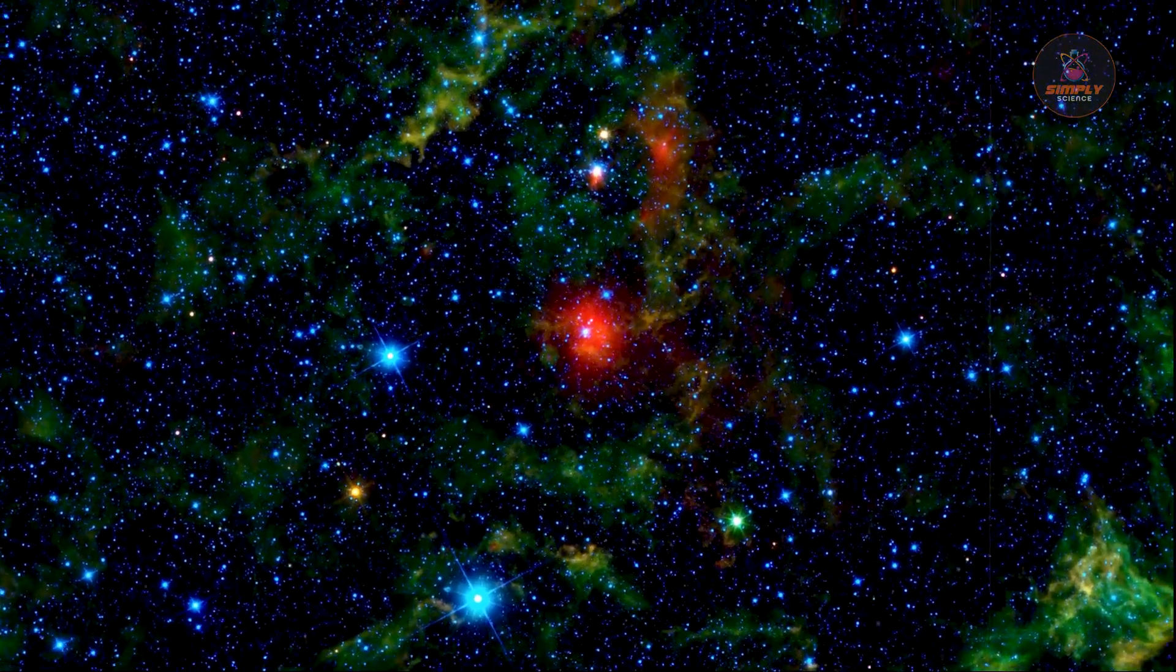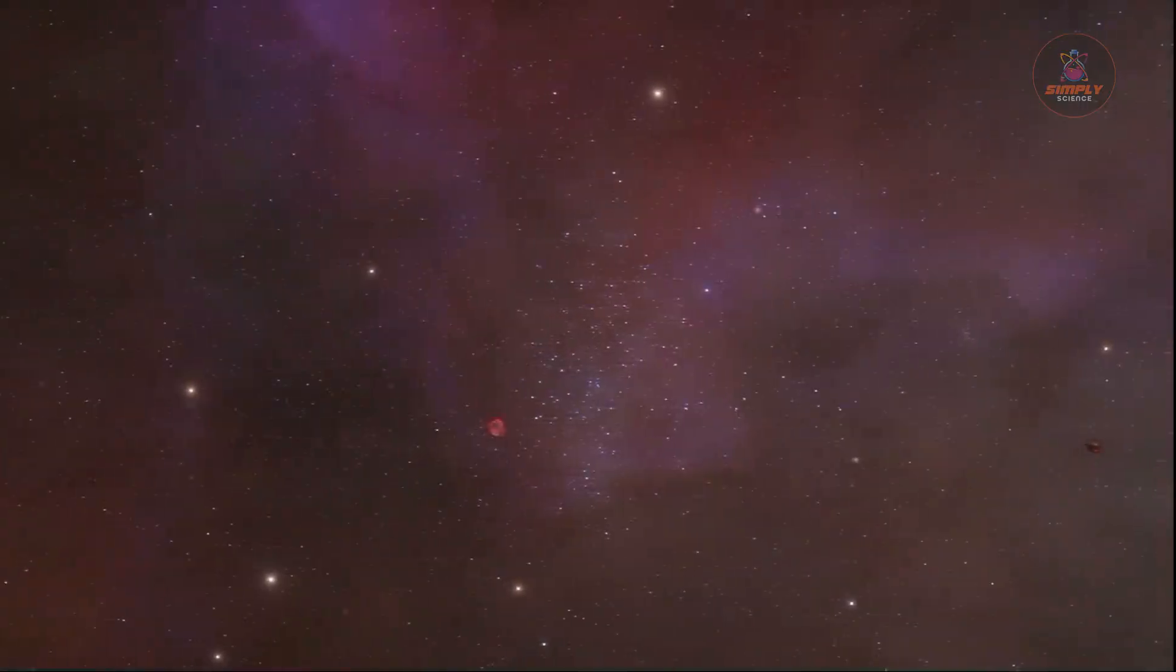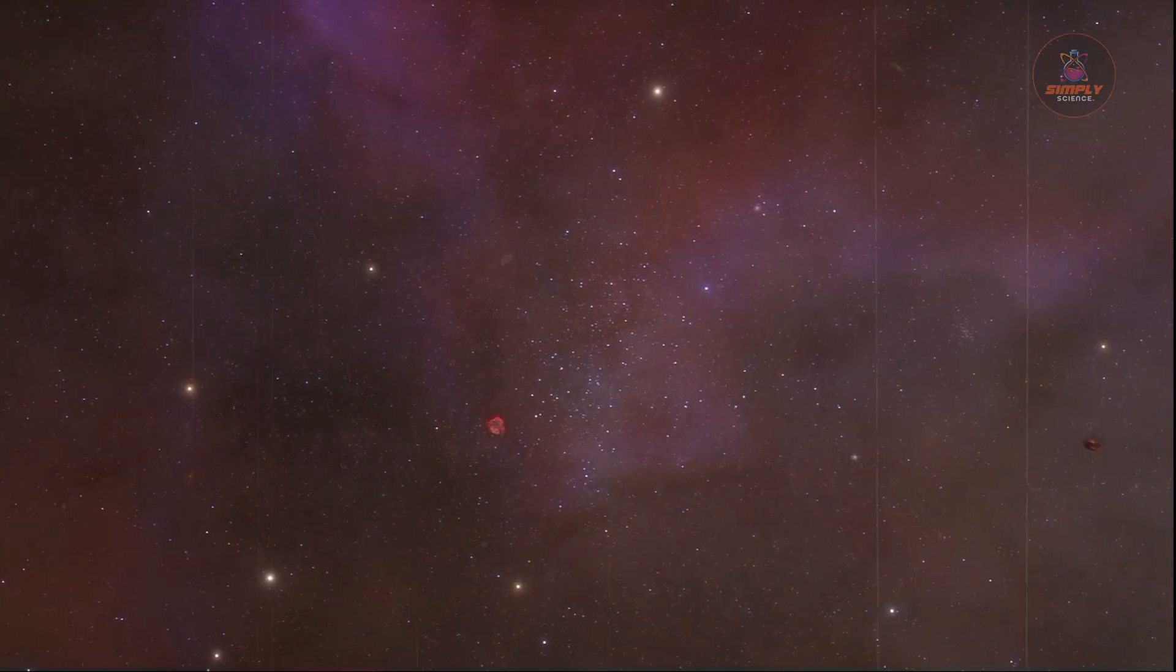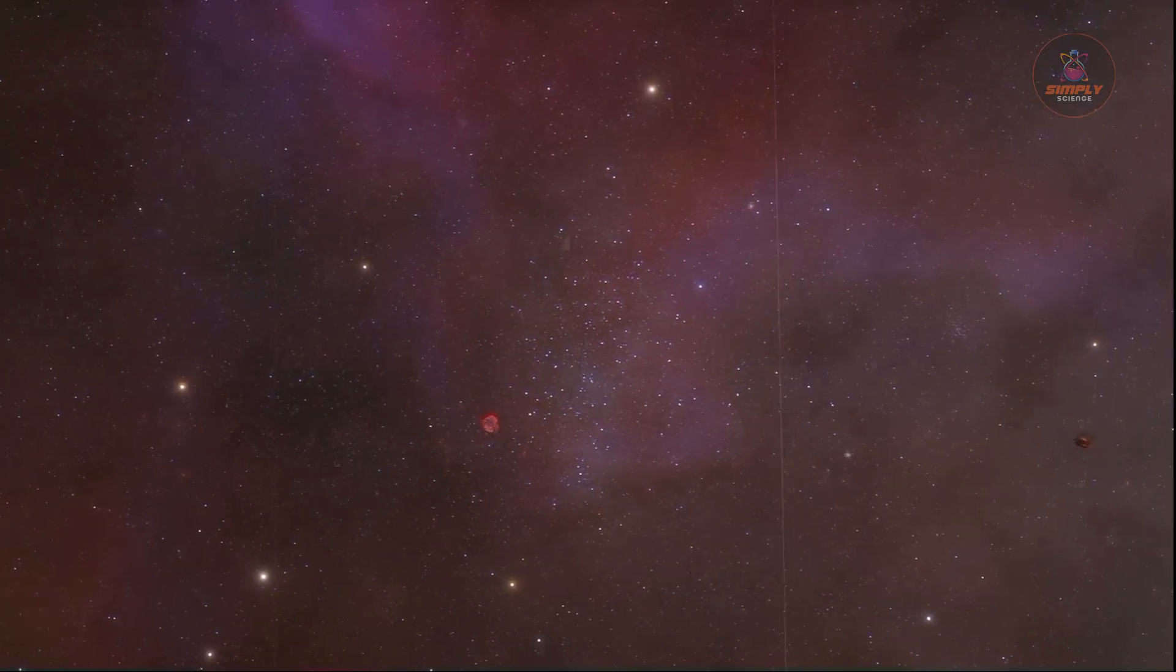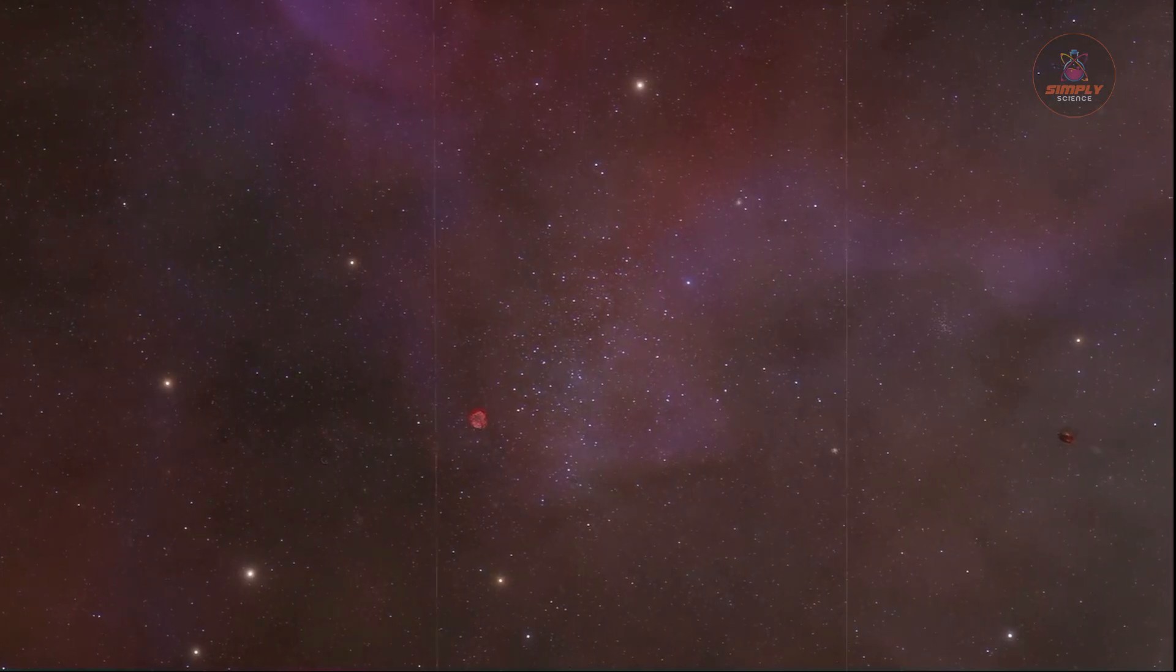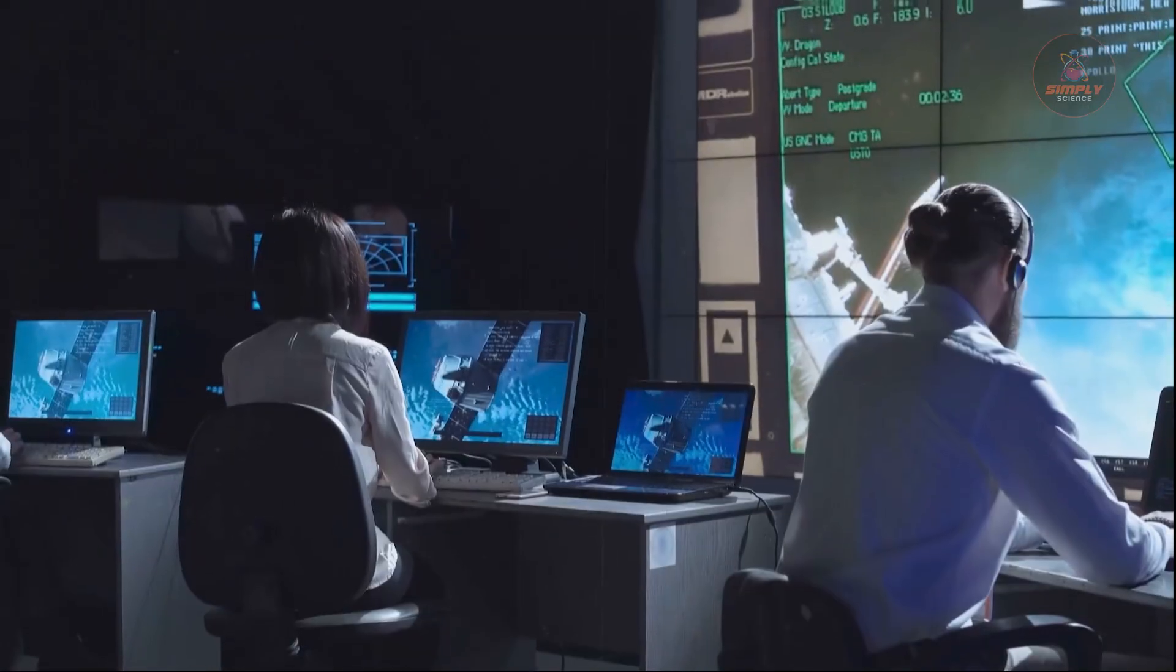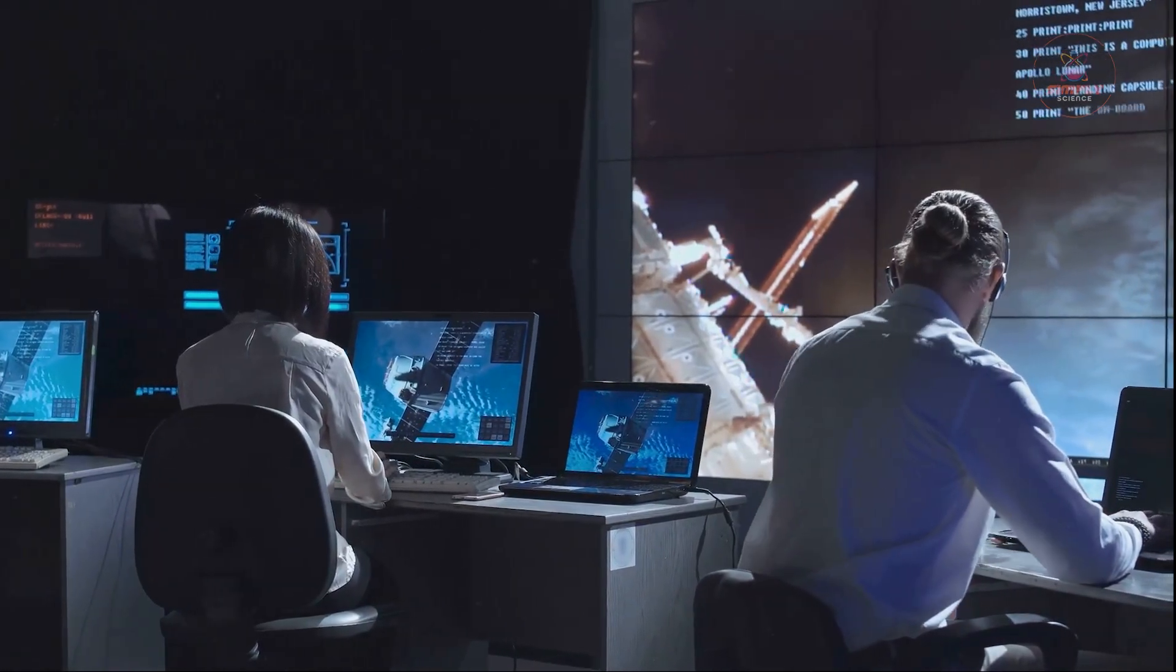The James Webb Space Telescope has shown us that the universe is not just larger than we thought, but stranger, more complex, and was built far faster than we ever dared to imagine. The Hubble Ultra Deep Field was a postcard from the past, but COSMOS-Webb is the first draft of a new history, one that we are only just beginning to read. The real frontier isn't just about distance anymore—it's about how quickly we can rethink everything we thought we knew.